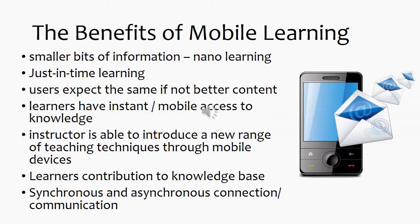Evidence in the literature shows that for mobile learning to be effective, it has to be very small chunks of information — known as nano learning or micro learning. This allows for learning on the go, on the fly, which is known as just-in-time learning. As and when you need the information, you access it. It is expected to be of good quality, relevant to the workplace and real world, on-demand and self-based. It can be used as asynchronous learning but also allows for synchronous learning.